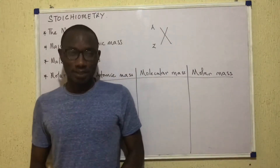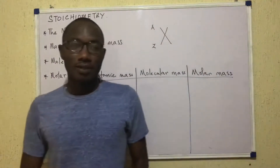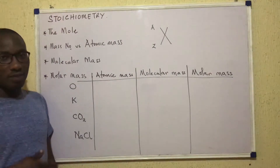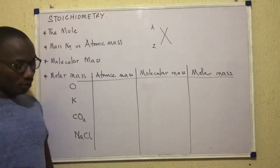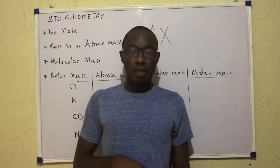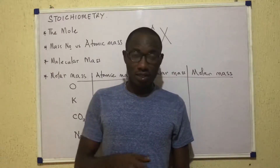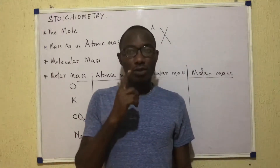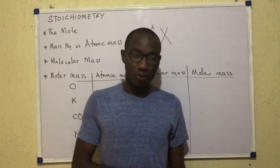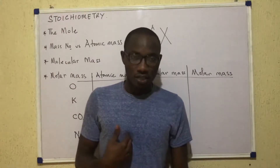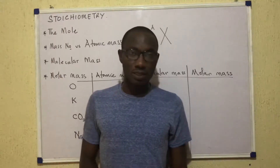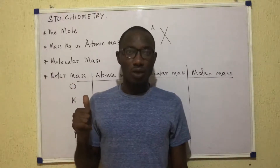Welcome to our study of stoichiometry. Stoichiometry is that aspect of chemistry that has to do with relative amounts of materials involved in a reaction or in a chemical change. When a reaction takes place, a chemist might look out for color changes or formation of precipitates, but may also be interested in what quantities of reactants give a certain quantity of products, or what quantity of one reactant is required to react with another. So once we deal with quantities, we are in stoichiometry.